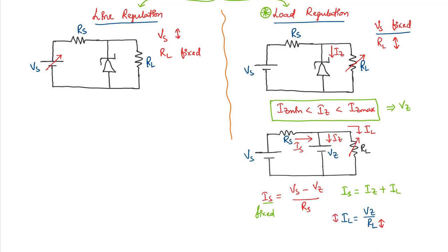When Il is changing, if you take it backwards when Il is changing we know that Is is a fixed quantity as we have discussed here, which means Iz will be changing.